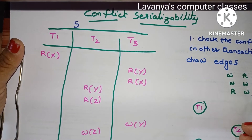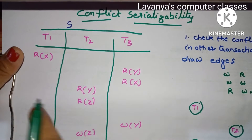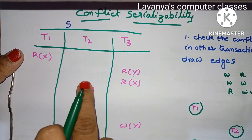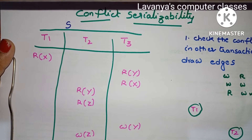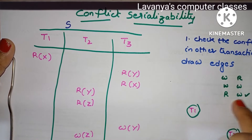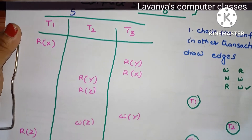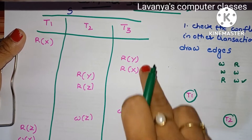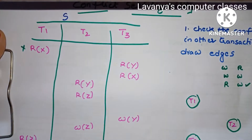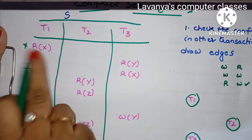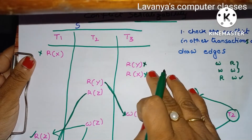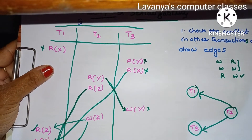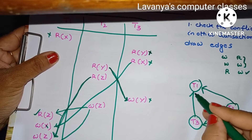First, R(X) — R conflicts with W. Check if R(X) in T1 conflicts with W(X) in another transaction. W(X) is not available in T2 or T3, so R(X) is not a problem. Next, check R(X) conflicted with W(X) — T3 has W(X), so there is an edge from T3 to T1.